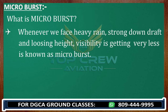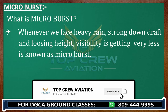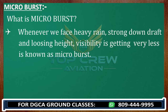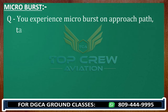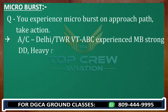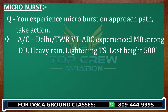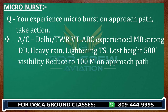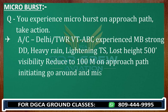For a microburst on the approach path, the call is: 'Delhi Tower, Victor Tango Foxtrot Bravo Charlie. Experienced microburst. Strong downdraft, heavy rain, lightning, thunderstorm. Lost height 500 feet. Visibility reduced to 100 metres. On approach path. Initiating go-around and missed approach procedure.' This is how we report and respond to a microburst on approach.